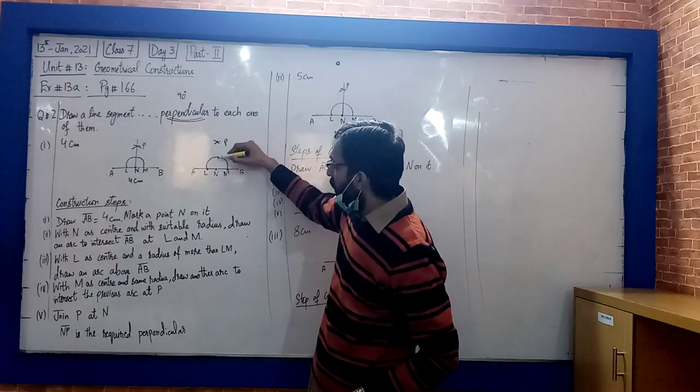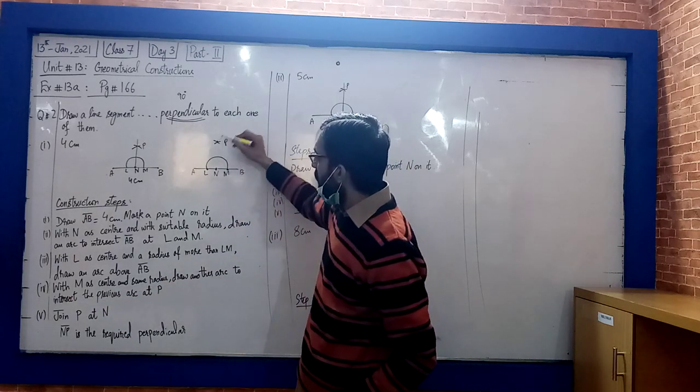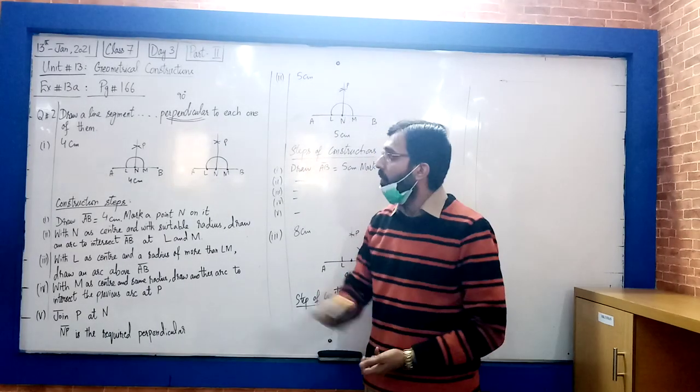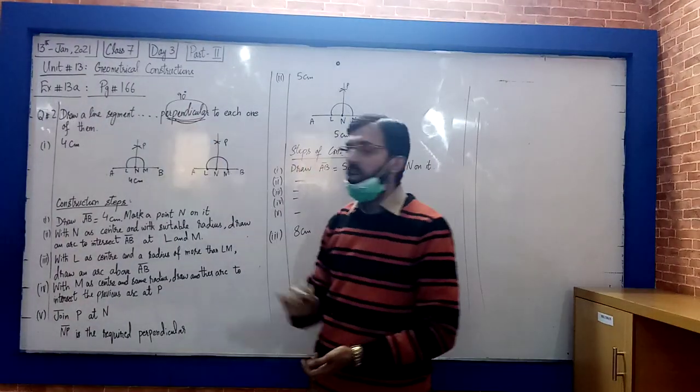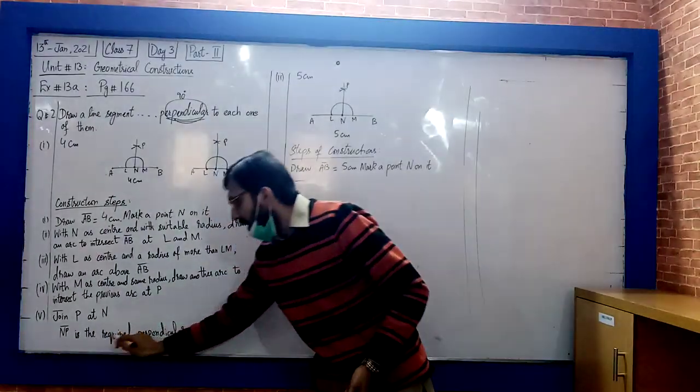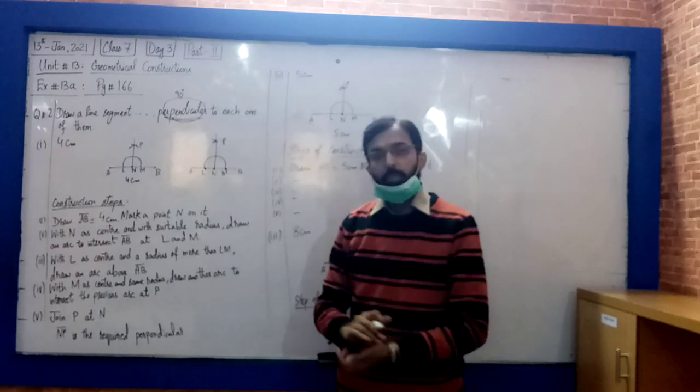Then we got the point P. Now, what do we have to draw? Yes, perpendicular. We have to draw perpendicular. NP is the perpendicular. This P line, NP line is your perpendicular.